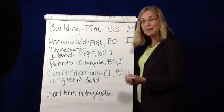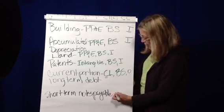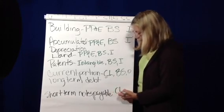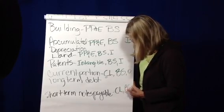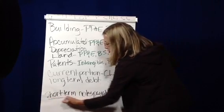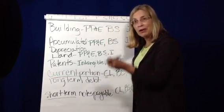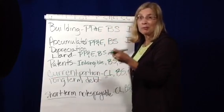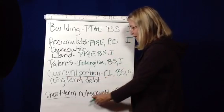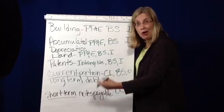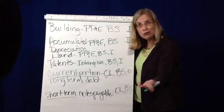Short-term notes payable is also a current liability. It's on the balance sheet, and it's an operating account. And notice short-term or current portion are what tips you off that they will come due or are payable in the next 12 months. If it said long-term debt or notes payable long-term, then those would be not current liabilities, but long-term liabilities.